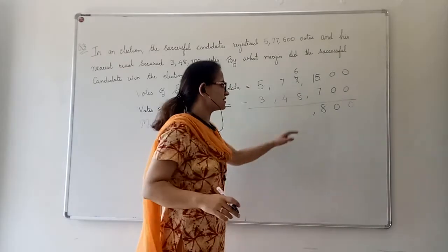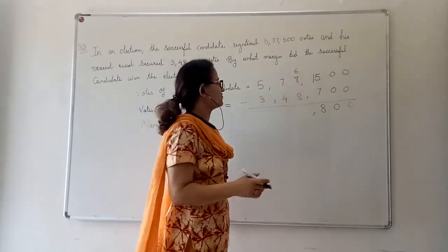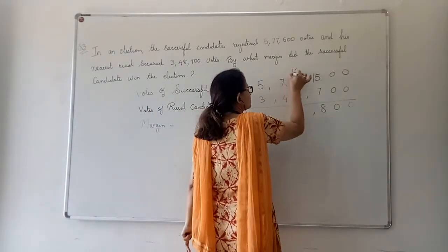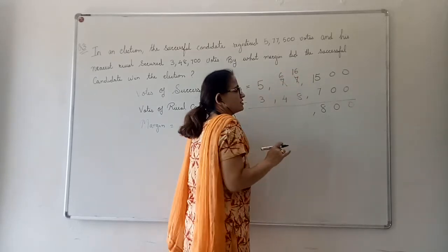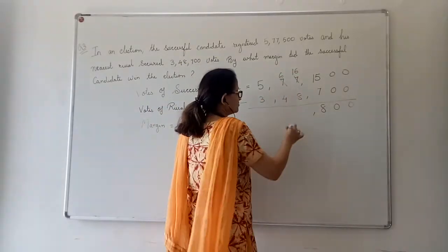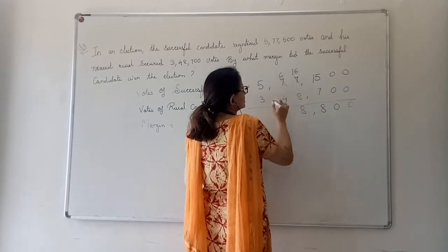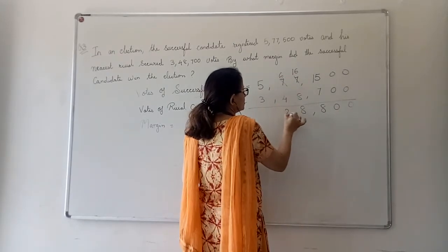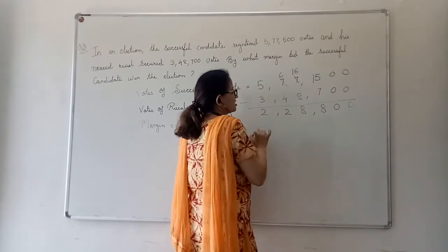I cannot subtract 8 from 6. So, definitely I need to borrow it from the neighbor and the neighbor will lose 1. Now, 16 minus 8 will be 8. 6 minus 4 will be 2. 5 minus 3 will be 2.